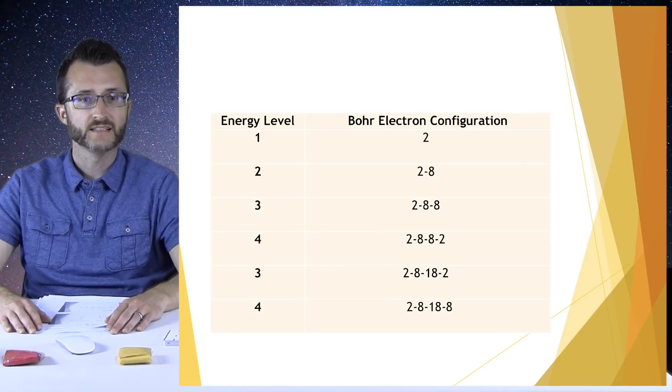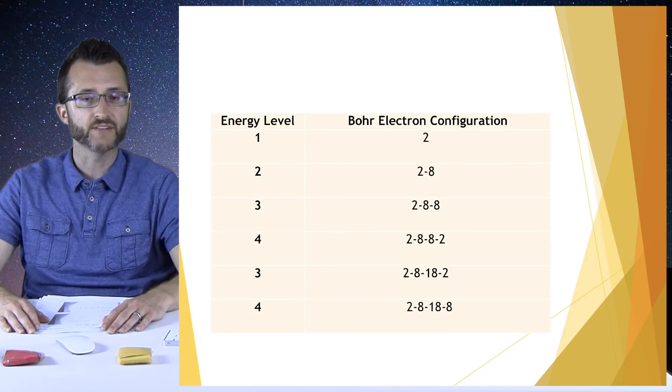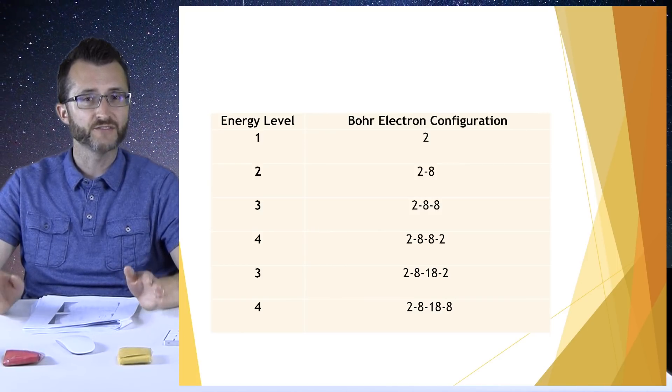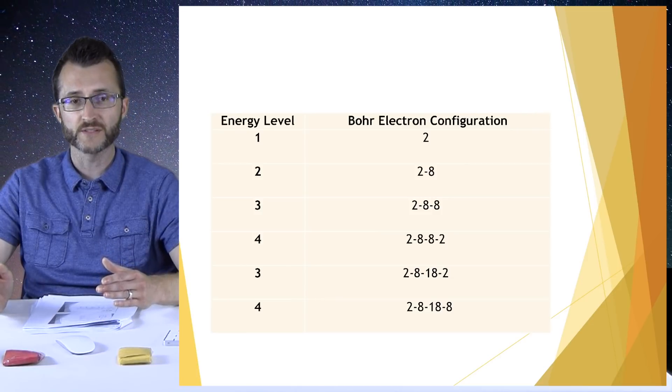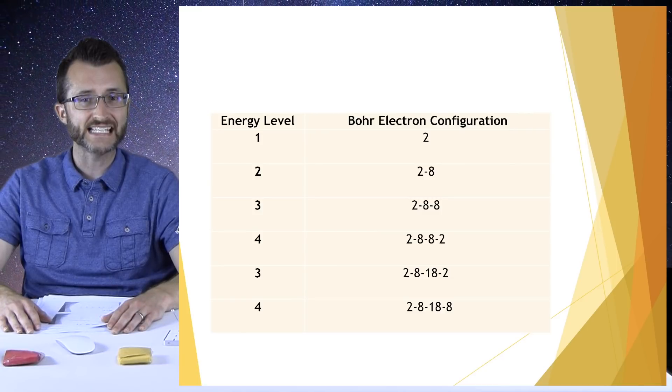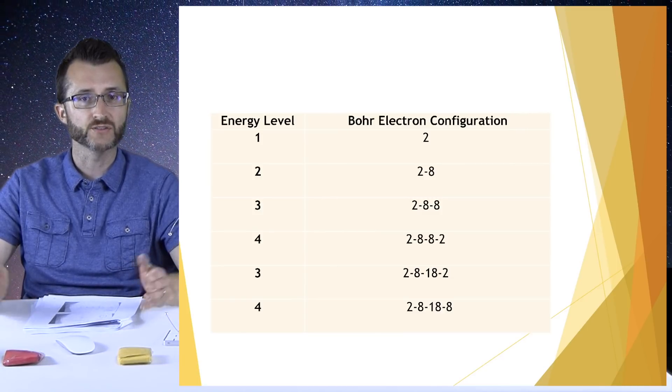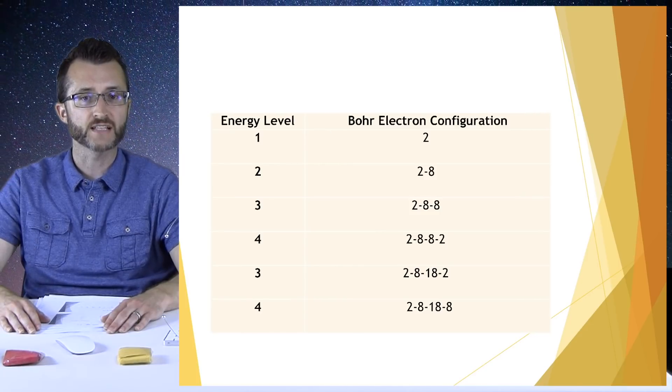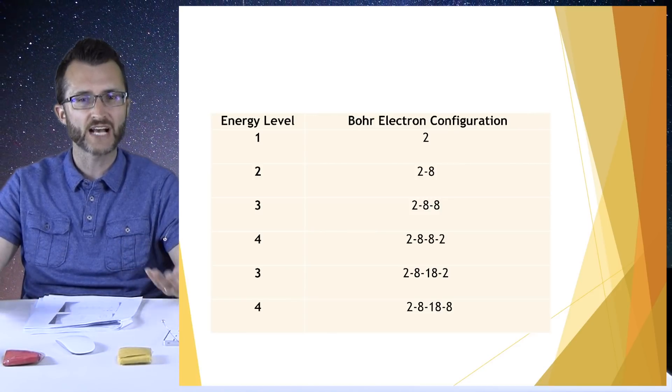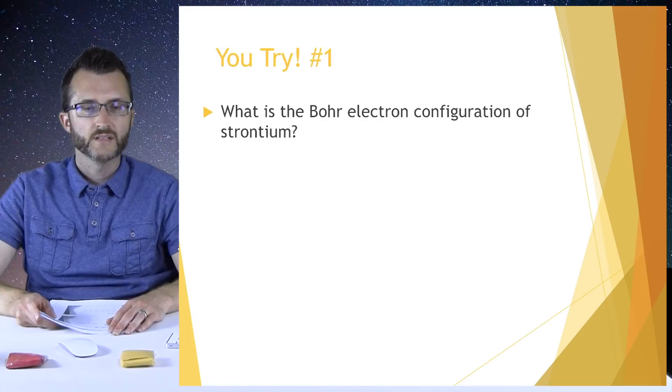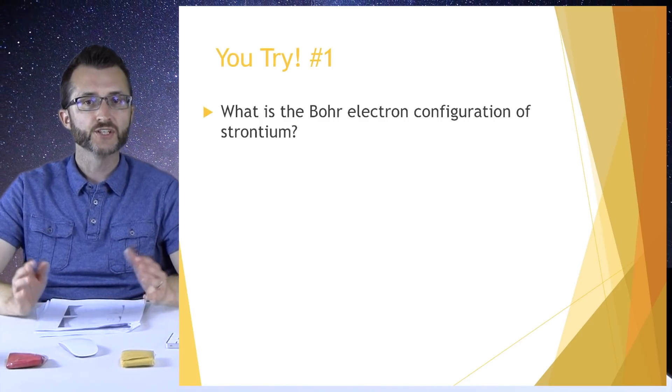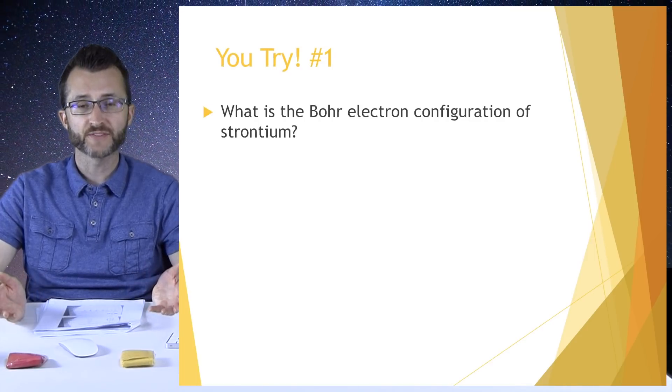Moving on to three, we have 2-8-8, and we begin to fill up the fourth energy level as 2-8-8-2. But it's a little bit strange here. We're actually not done filling up the third energy level. We start filling the fourth with two, and then we go back and we finish filling the third with a total of 18. So now we're 2-8-18-2. We continue on filling up the fourth energy level at 2-8-18-8, and we can continue on from there. But this gives you a general idea of how the energy levels are filled. You try number one. What is the Bohr electron configuration of strontium?